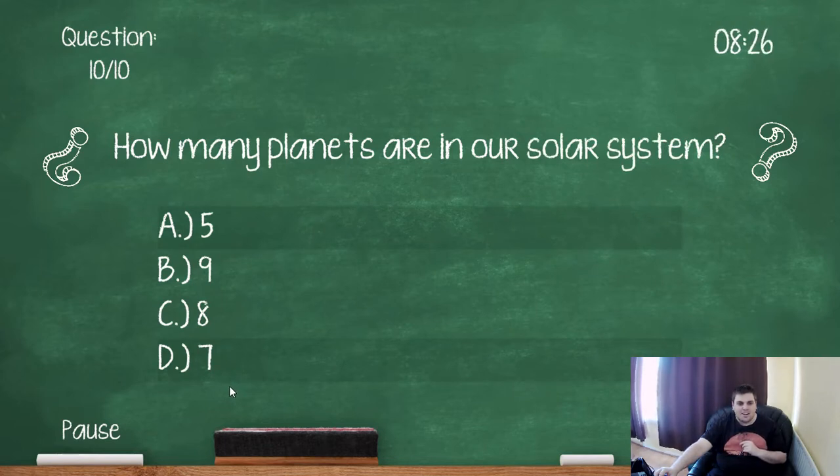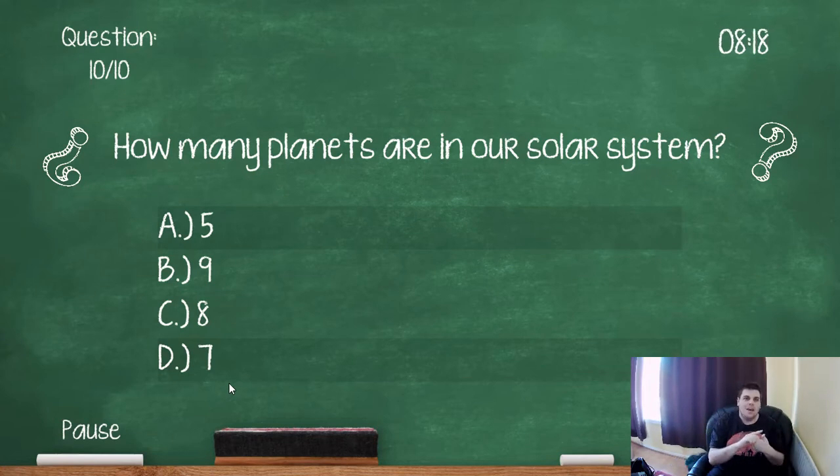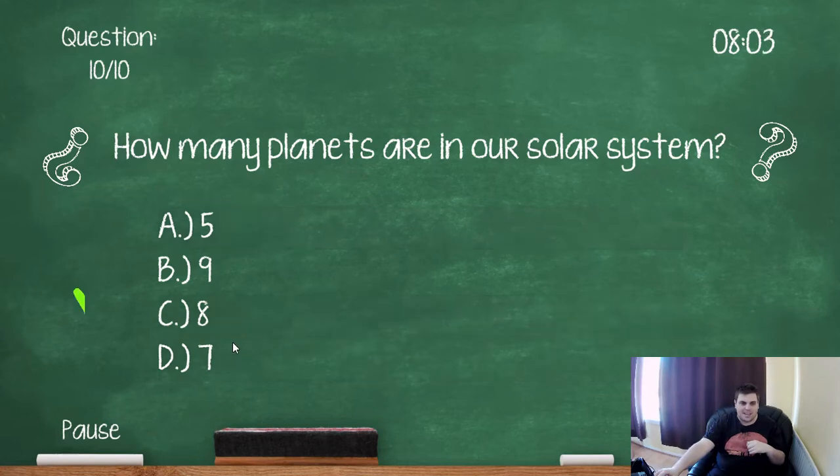How many planets are in our solar system? I knew they would, oh, controversial. Okay, for me, I'm going to say eight because it's Mercury, Venus, Earth, Mars, Jupiter, Saturn, Uranus, Neptune. Those are the eight official ones, but some people argue that Pluto is a planet. I'm going to go for eight. Yes!